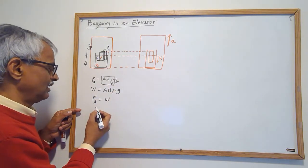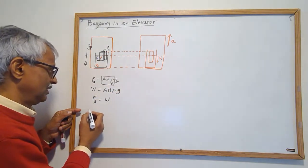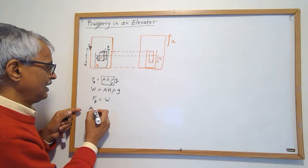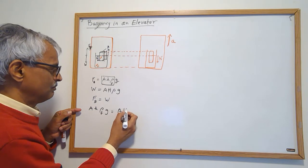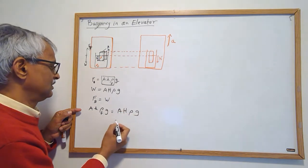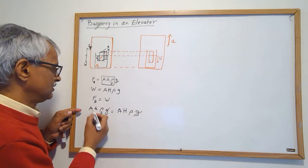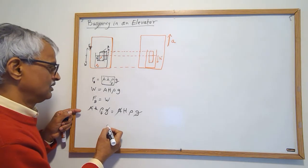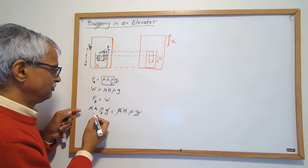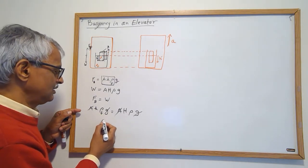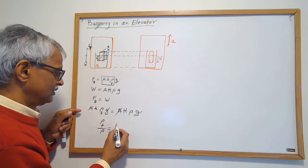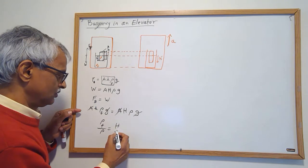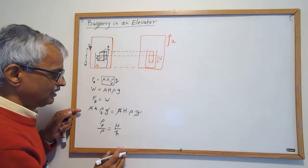And you can see I can cancel some things and I get a nice relation which I can use later. So you have A h ρf g and A big H ρ g. All the g cancels out, the area of cross-section A cancels out, so I see that the density ratio ρ/ρf is the height ratio, full height divided by the submerged height.